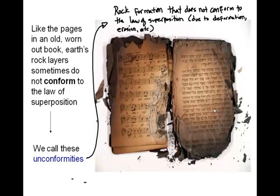I like to use this analogy. An unconformity in nature — the rock layers that you see in a cliff, in a mountain — they're sort of like a book, a history book, if you will. An unconformity is when you start ripping pages out, burning pages, ripping the edges off, losing words by ripping pieces out. It becomes this unconformed book that no longer goes from beginning to end in a nice, neat way that you can read.